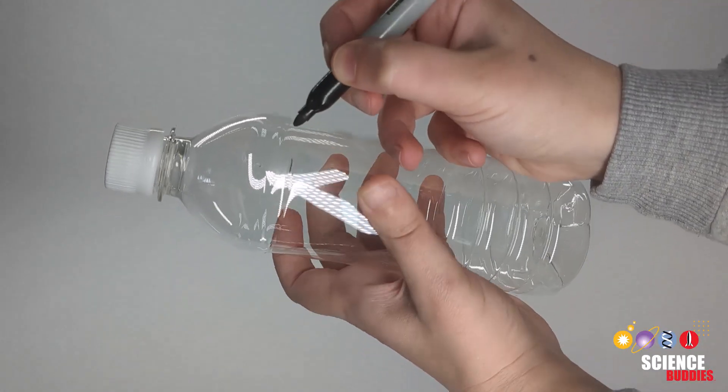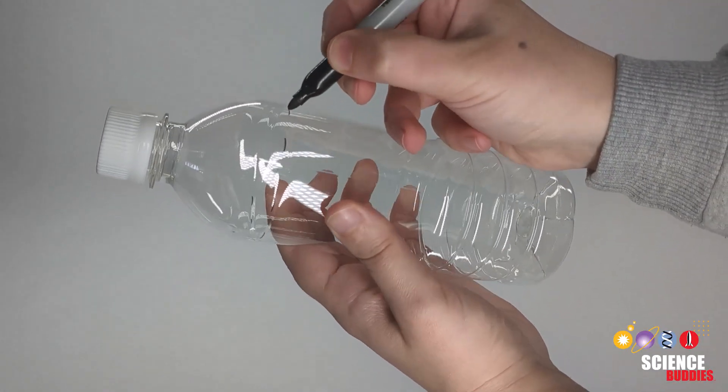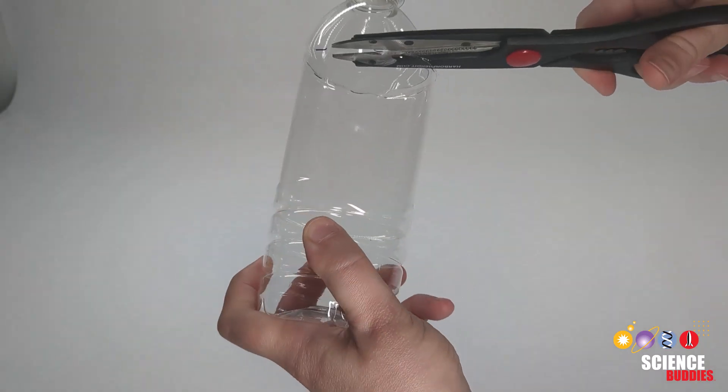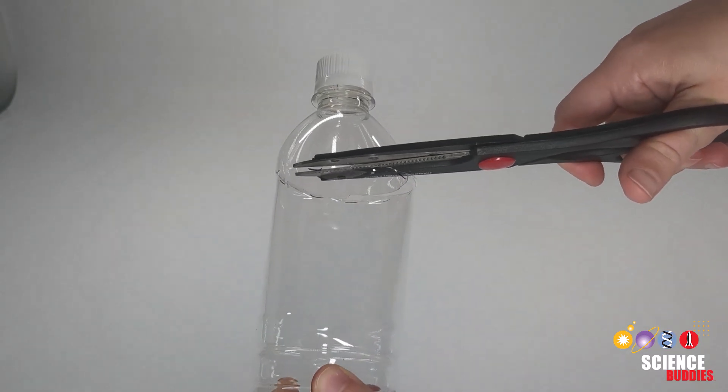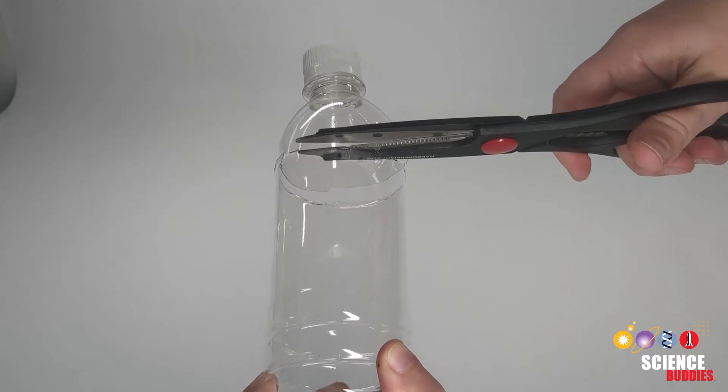To start this experiment you'll first need to mark along the upper lip of the bottle to indicate where you will cut it. Then you will use scissors or a knife to cut along the marking around the bottle.